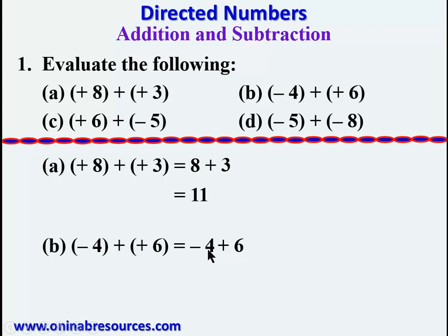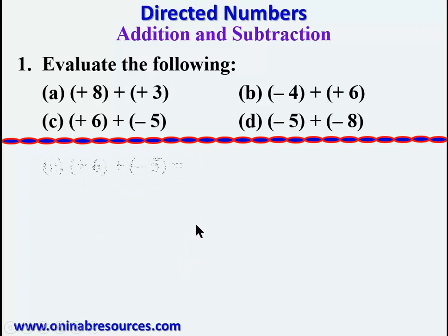From our previous lesson, negative 4 plus 6 can be written as 6 minus 4, and 6 minus 4 is 2. So negative 4 plus positive 6 equals 2. For (c): positive 6 is still written as 6, and positive times negative gives negative 5, so we have 6 minus 5, which gives 1.